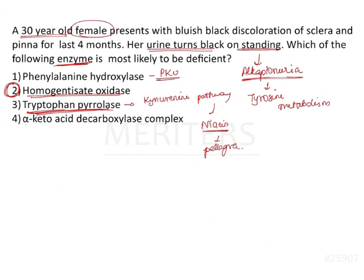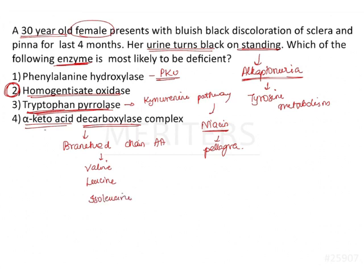If tryptophan pyrolase is deficient it results in niacin deficiency leading to pellagra — a completely different entity involving tryptophan. The fourth option, alpha-keto acid decarboxylase complex, is an enzyme involved in branched-chain amino acid metabolism. The branched-chain amino acids are valine, leucine, and isoleucine. In their metabolism, in the second step, alpha-keto acid decarboxylase (dehydrogenase) catalyzes the reaction, and if deficient it results in maple syrup urine disease (MSUD).